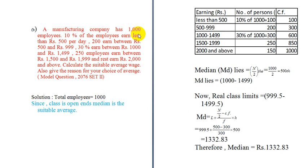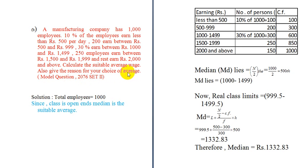A manufacturing company has 1000 employees. 10% of the employees earn less than Rs. 500. 200 employees earn between Rs. 500 and Rs. 599. 30% earn between Rs. 1,000 and Rs. 1,499, and 250 employees earn between Rs. 1,500 and Rs. 1,999, and the rest earn Rs. 2,000 and above. Calculate the suitable average wage.